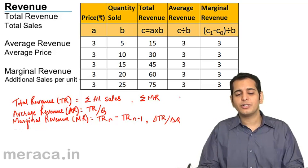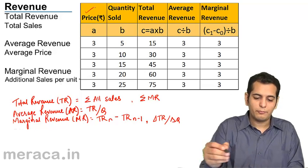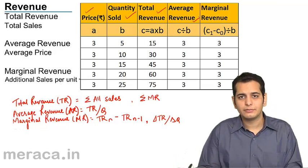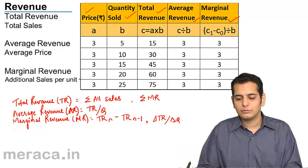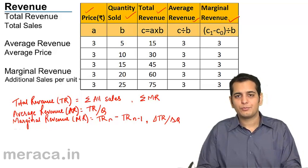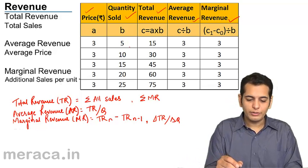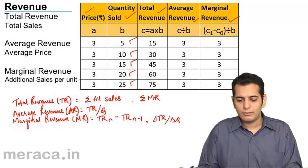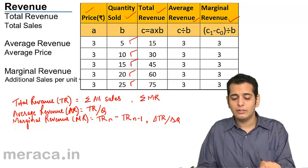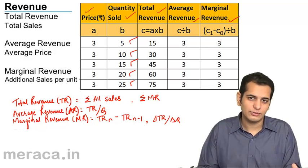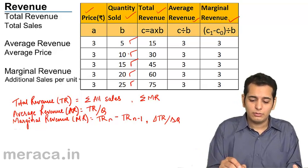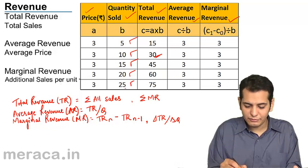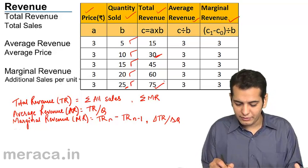Now here we have a schedule showing the price of the product, the quantity sold, and total revenue generated. The price of the product is 3 throughout — the product is sold at a uniform price of 3. The quantities sold are 5, 10, 15, 20, and finally 25. When 5 units are sold at a price of 3, total revenue is 15 (5 × 3). When 10 units are sold at price 3, total revenue is 30. When 25 units are sold, total revenue is 75 rupees.